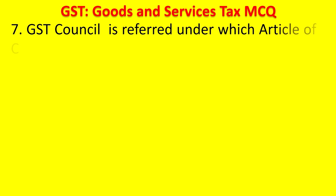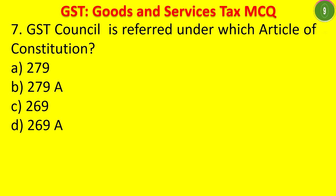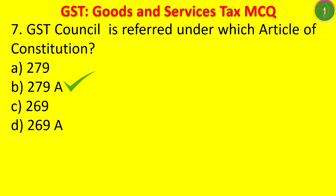Question 7: GST Council is referred to under which article of the Constitution? Options: 279, 279A, 269, 269A. Under the Constitution of India, Article 279A refers to the GST Council, which makes rules governing GST rates and related matters.